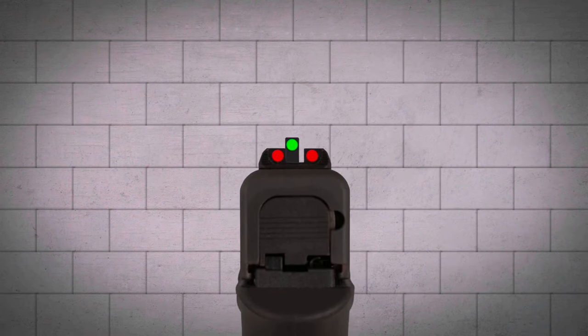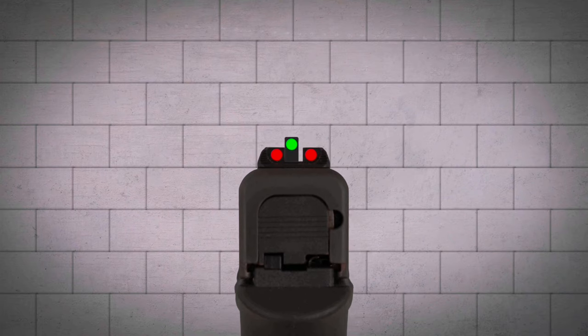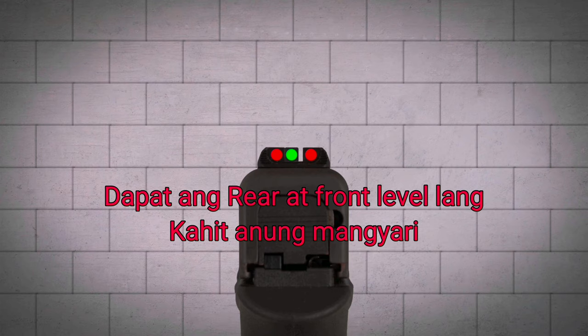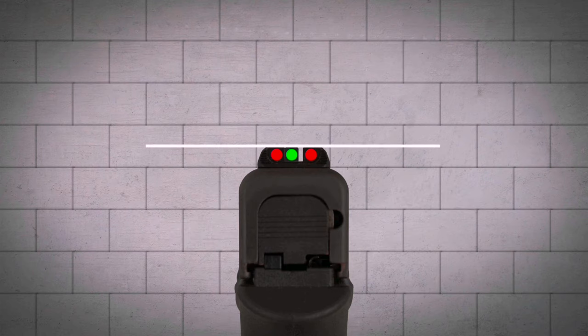To attain proper sight alignment, look down your sights and place the flat top of the front sight in line with the flat tops of the rear. This will ensure your rounds strike at a consistent elevation.